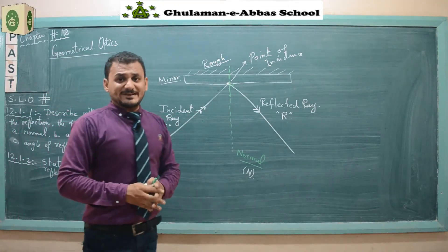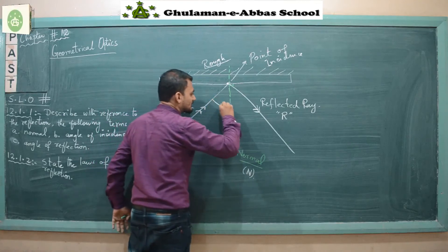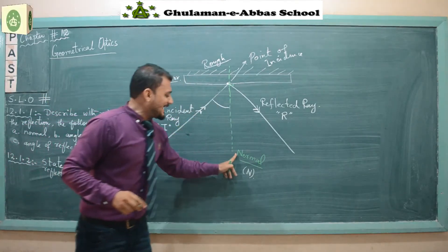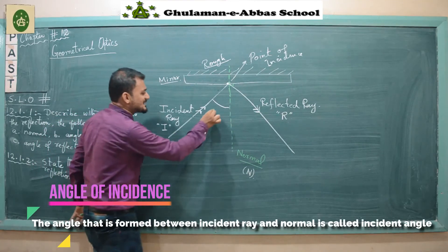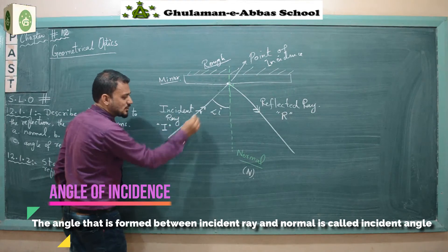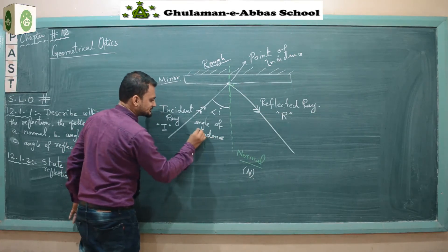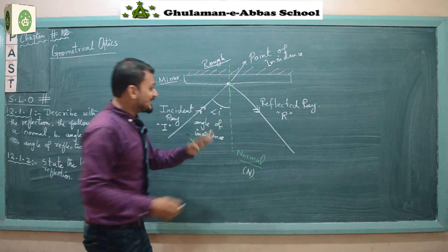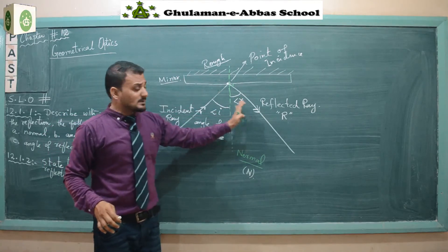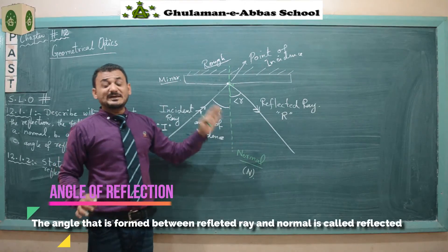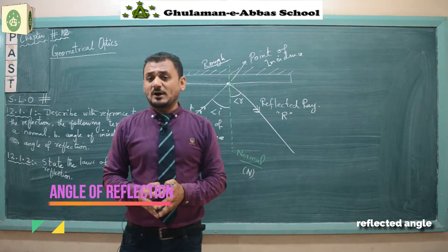There are another two terms: angle of incidence and angle of reflection. The angle between the incident ray and the normal is known as the angle of incidence, represented by small i. The angle formed between the reflected ray and the normal is known as the angle of reflection.